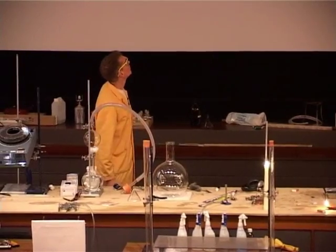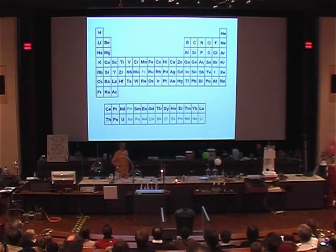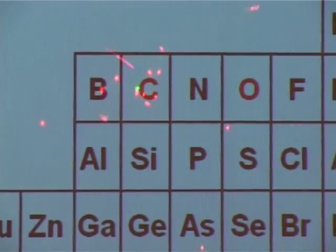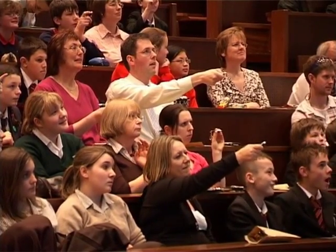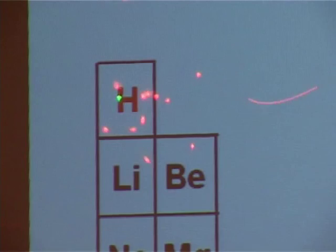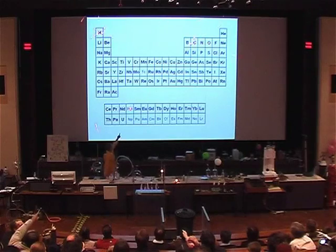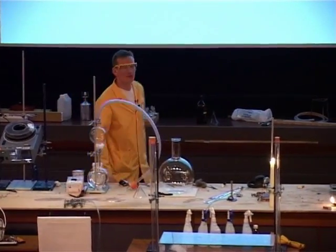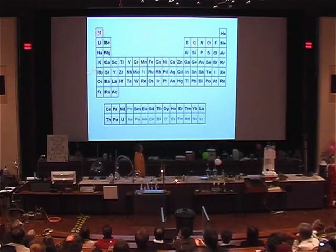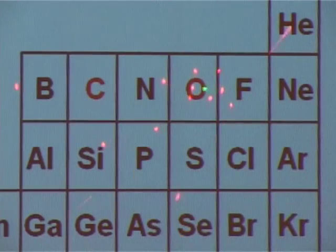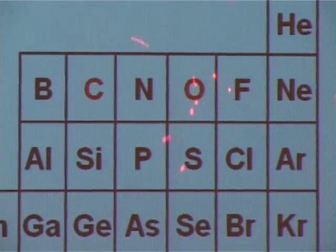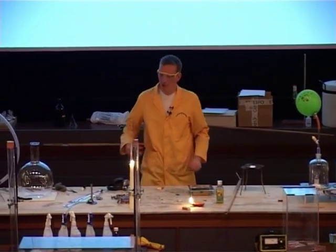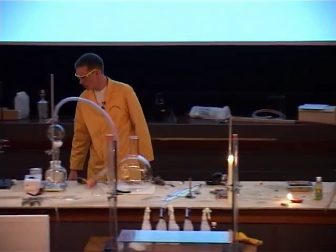Perhaps we can have a look on our periodic table to see where these elements are, and perhaps those with laser pointers can help me out. Can you point to carbon please? Yes, some of you have found carbon. And what about hydrogen — can you find hydrogen? Yes, there it is. And of course these are burning by reacting with the oxygen in the air — where's oxygen? Very good. So these are the fuels we're seeing here: the fats — carbon, hydrogen, and maybe a little bit of oxygen. Some fuels contain just carbon and hydrogen only.